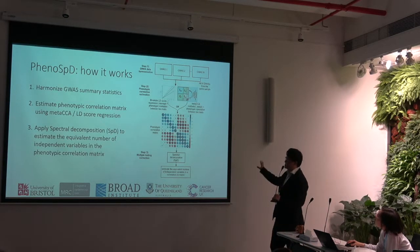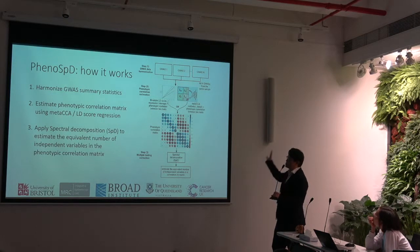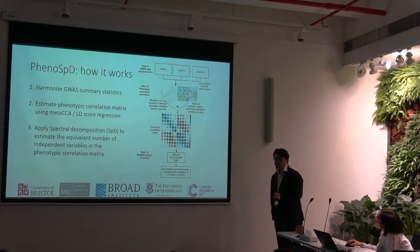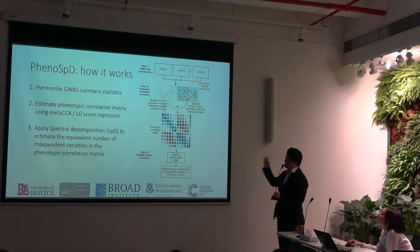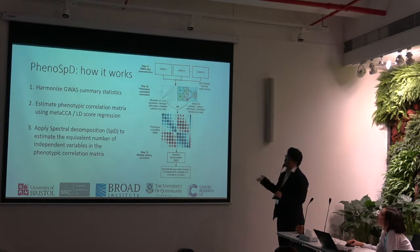The scope of PhenomeSPD is actually quite simple — three steps. First, we harmonize the GWAS summary results into the same format, which we have already achieved via MRBase and LDHub. In the second step, we estimate the phenotypic correlation matrix using two existing methods, either meta-CCA or LD score regression, which I will introduce more on the next slide. The third step is called SPD, which estimates the effective number of tests using any correlation matrix.